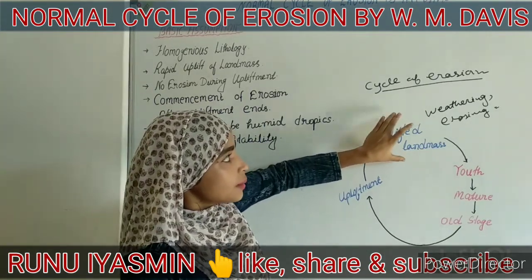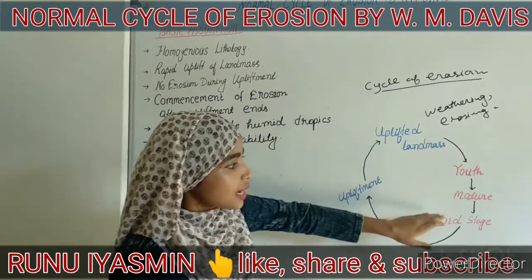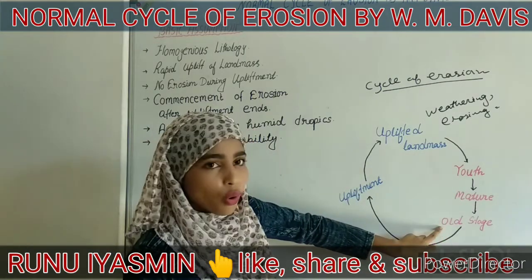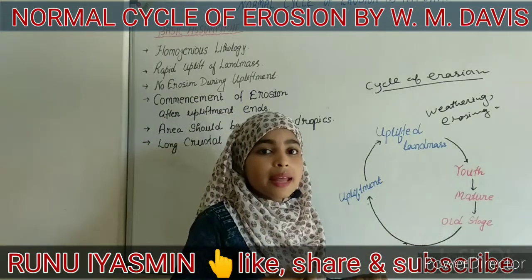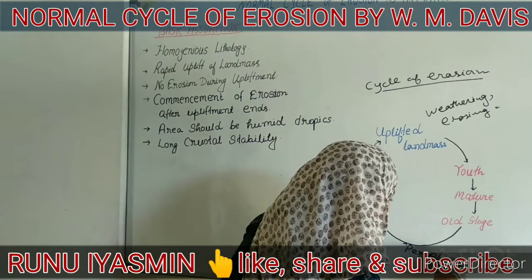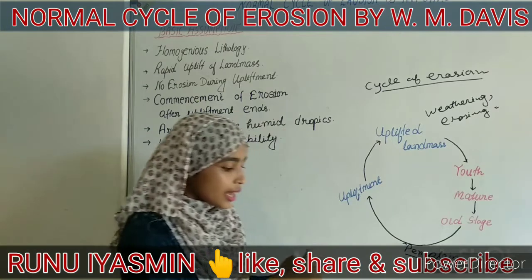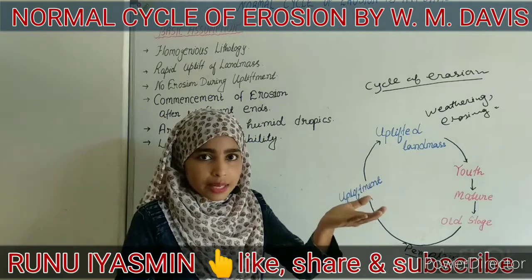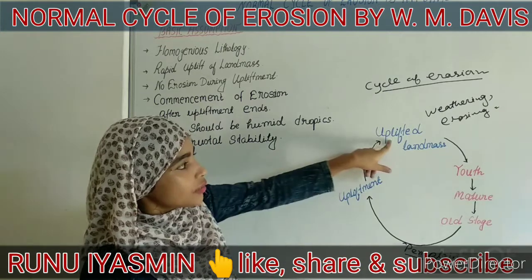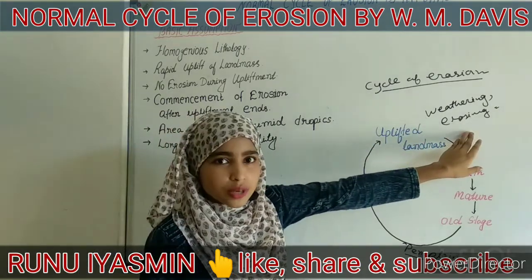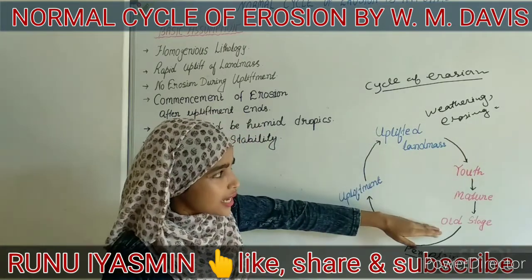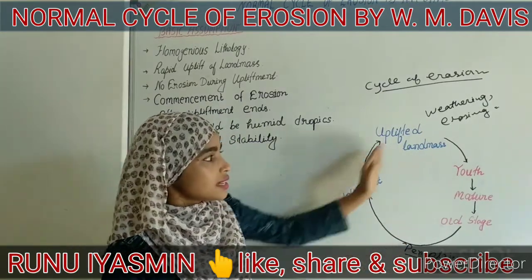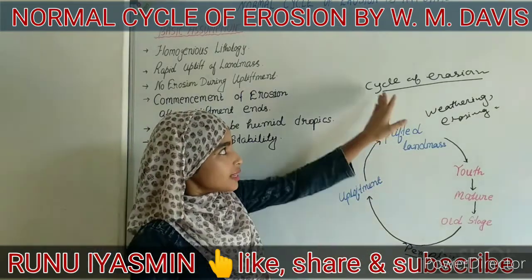This uplifted landmass, through the weathering and erosion process, goes through sequential stages — the youth stage, mature stage, and old stage — and then becomes a feature-free plain region known as peneplain. This is the last stage of the cycle of erosion. After that, due to the endogenic force, the landmass is uplifted again and goes through the same sequential stages, making it a cyclic process known as the cycle of erosion.